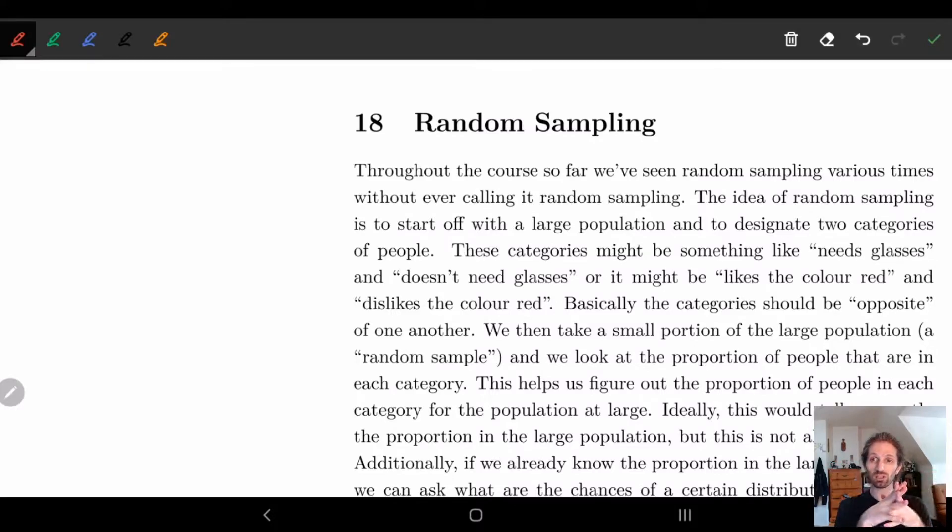We then take a smaller portion of this large population. So we just take a few marbles out of the bag. In other words we take some subset of the large population and we look at what happens in a small population. And based off the small population we want to say what happens in the larger population. But ideally looking at the small population will tell us information about the large population. So information about something small gives us information about something big.